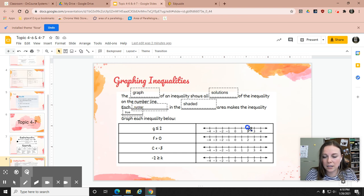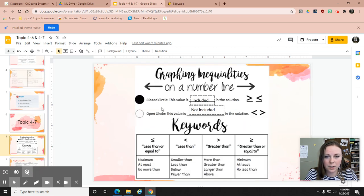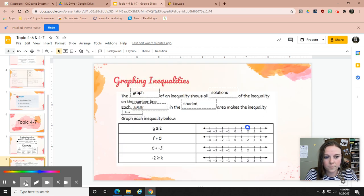Then I have to ask myself, should that be shaded in or does it need to stay open? I have that equal to part. So if I go back here, these signs need a filled in circle. So I'm going to fill that in. Now I'm going to determine, should I shade to the right of the circle or to the left? And I'm shading solutions to the inequality.